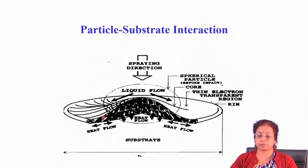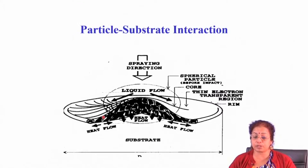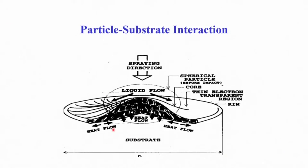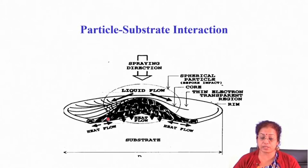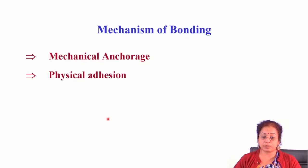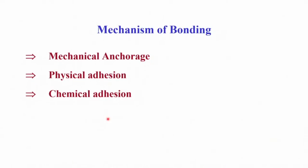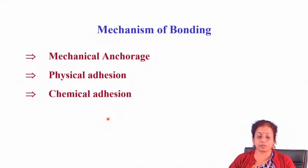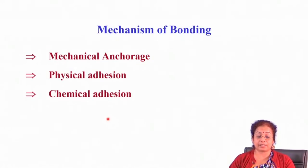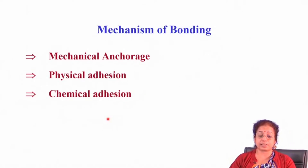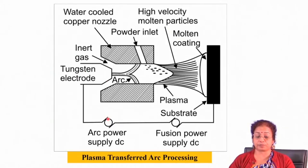At the particle-substrate interface, there is always a very thin diffuse layer, adhesion, and incipient fusion. The bonding mechanisms in thermal spray deposition include mechanical anchorage, physical adhesion, and chemical adhesion. For mechanical anchorage, the substrate must be prepared — typically by sandblasting — to create grooves on the surface, which promotes anchoring and results in high coating strength.